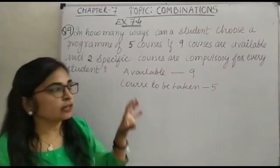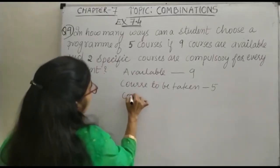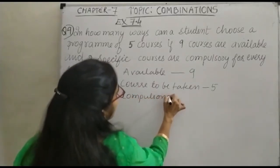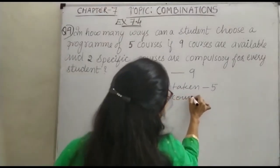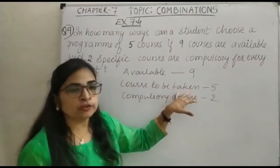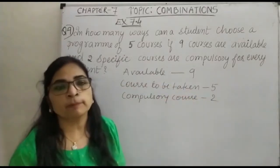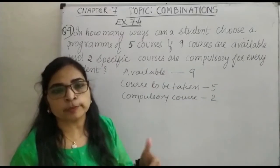Then what is the condition given? 2 specific courses are compulsory. So compulsory course is equal to 2. Now just see, you have to take 5 courses in which 2 are compulsory courses. So you have to select how many courses? 3.